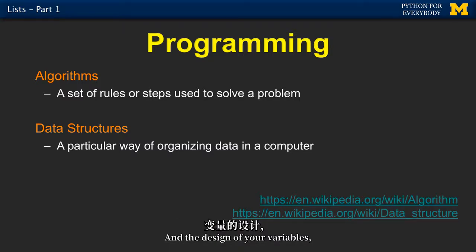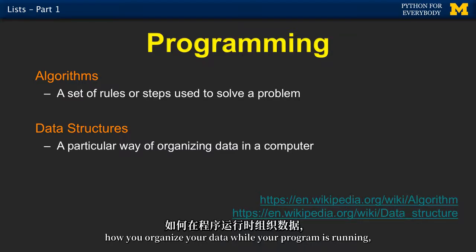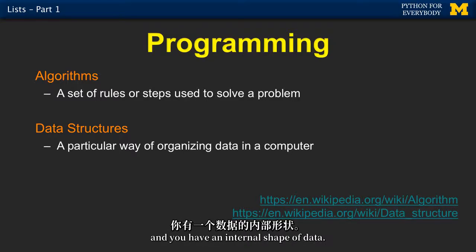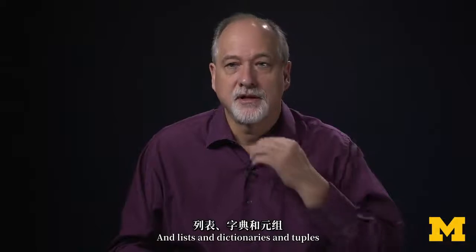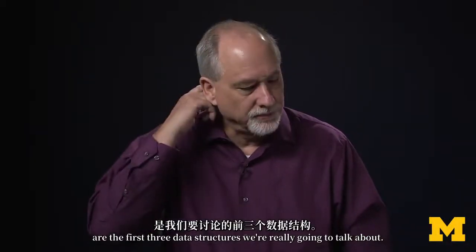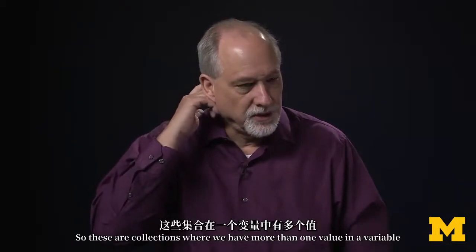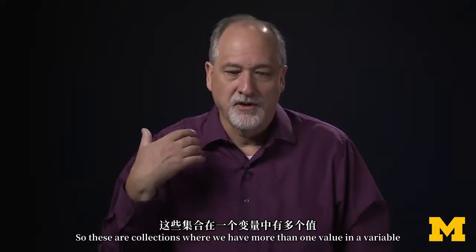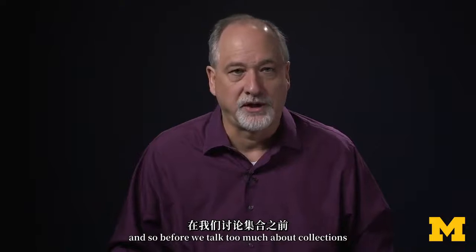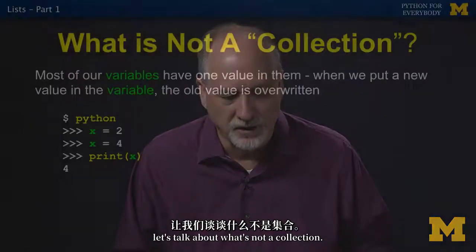The design of your variables, the design of your data structures, how you organize your data while your program is running, can help you solve your problem. You have a set of steps and an internal shape of data. Lists, dictionaries, and tuples are the first three data structures we're really going to talk about — collections where we have more than one value in a variable.